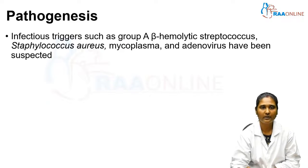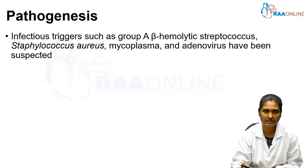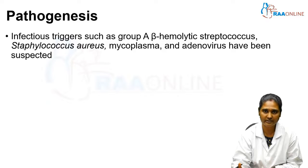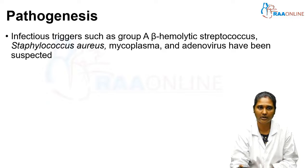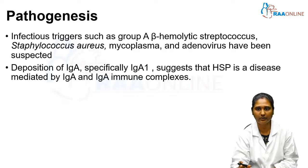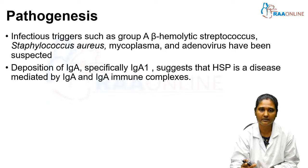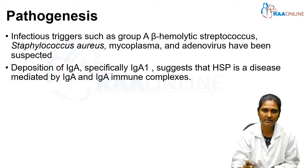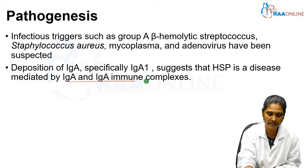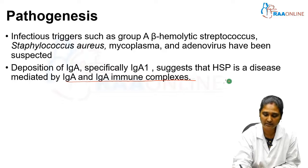Moving on to pathogenesis — there should be a documented URI prior to the development of HSP vasculitis. The infectious triggers suspected include Group A beta-hemolytic Streptococcus, Staphylococcus aureus, sometimes Mycoplasma, and adenovirus. The deposition of immunoglobulin A, specifically immunoglobulin A1, suggests that HSP is a disease mediated by IgA and IgA immune complexes — hence the name immunoglobulin A vasculitis.